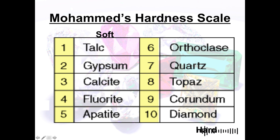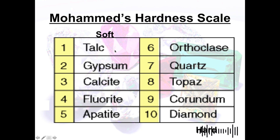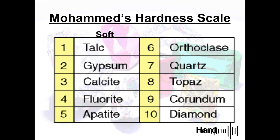We have what we call the Mohs hardness scale, which ranges from 1 (softest) to 10 (hardest). Talc is rated 1 on the scale — it is in powdered form and is commonly used in combination with cornstarch, widely used for baby powder.